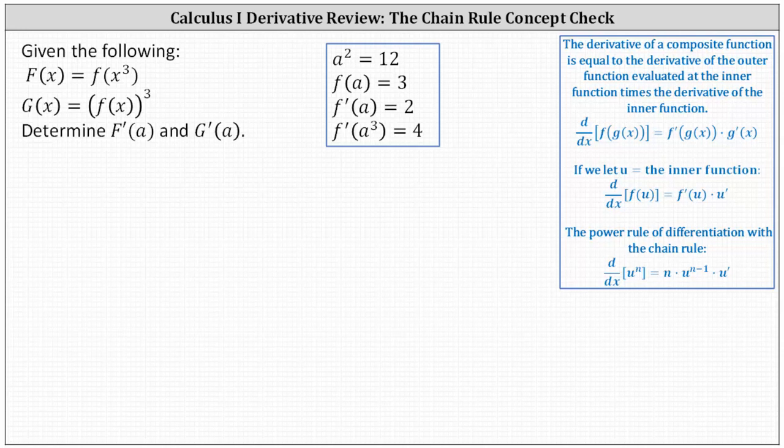We're given F(x) = f(x³) and G(x) = the cube of f(x). We're asked to determine F'(a) and G'(a) using the given information on the right. Because both F and G are composite functions, we need to apply the chain rule to determine the derivative functions.